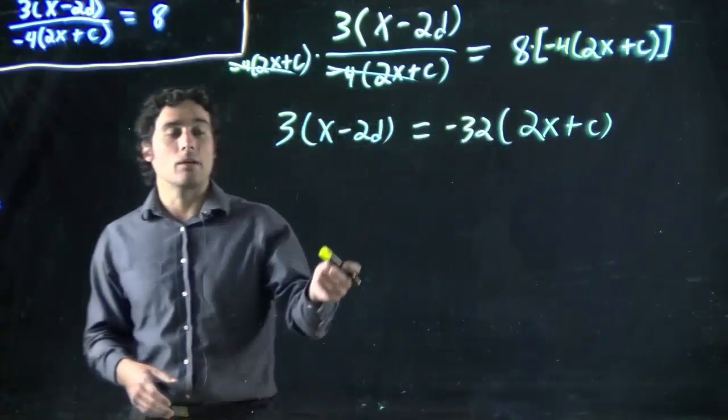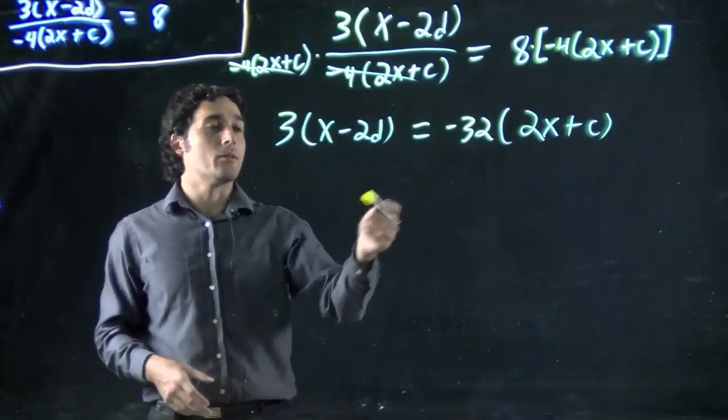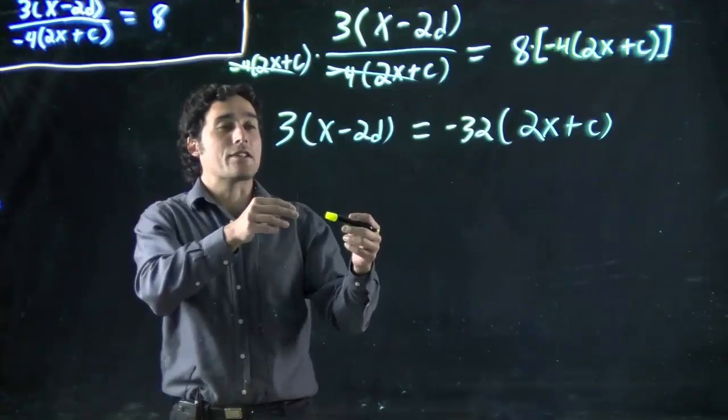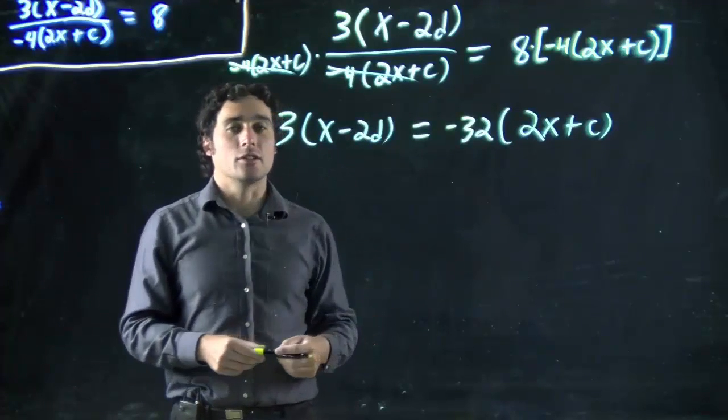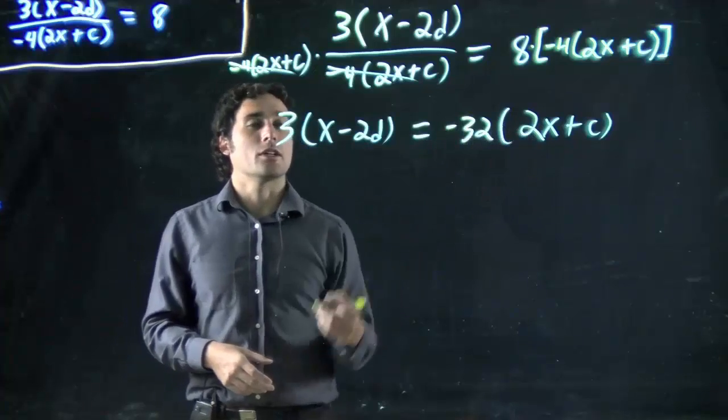Great. Going back to this kind of problem where I've got one term in brackets, another term in brackets, two variables. I'm going to want to combine my x's eventually, but I've got to get rid of the brackets first to do so. So I'm going to multiply 3 in on this side and minus 32 in on that side.